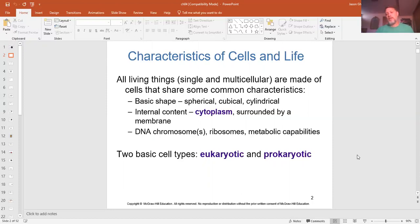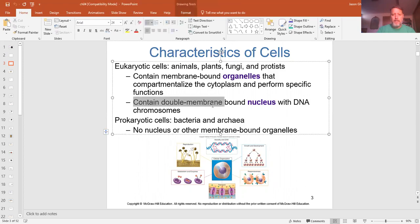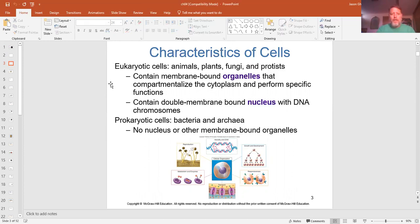Two basic cell types are eukaryotic and prokaryotic. We're going to mention eukaryotes, but we'll mainly be talking about prokaryotes. So eukaryotes, these are ones with the true nucleus. That's right here. A double membrane bound nucleus with DNA inside of it. They also have some membrane bound organelles. These are usually larger, much larger, than prokaryotes.